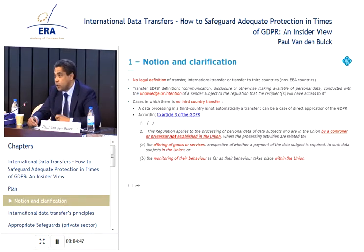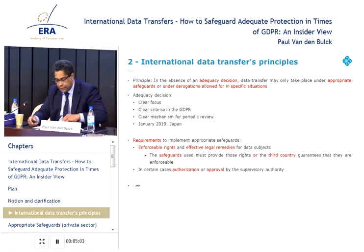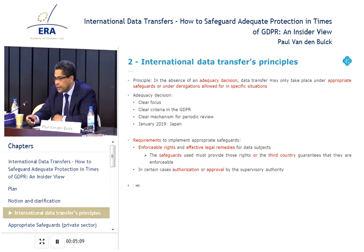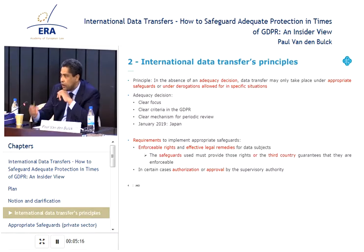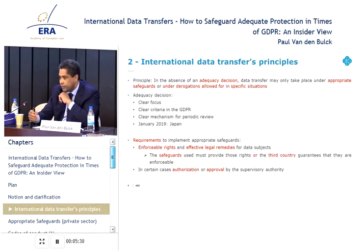So it's the case of Alibaba, for example — the Chinese Amazon — which is targeting the Chinese community here in Europe, even in Chinese, for the offering of goods or services, or who is monitoring behavior. Concerning international data transfer, nothing has really changed. You still have the same priority: adequacy decision, appropriate safeguard, and derogation allowed for specific situations.